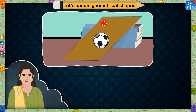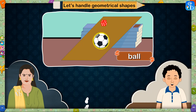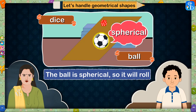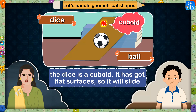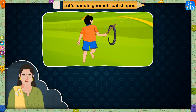Look at this first picture. Which objects do you see? A ball and a dice. Correct! The ball is spherical so it will roll, and the dice is a cuboid. It has got flat surfaces so it will slide.